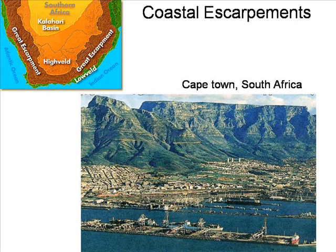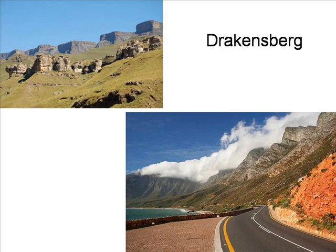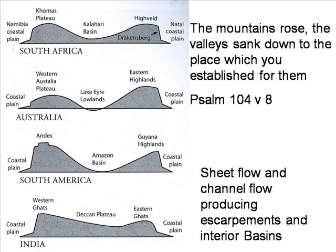The southern half of the continent of Africa is ringed by these enormous coastal escarpments, with the high-veiled plain and Kalahari basin behind it. Coastal escarpments and interior basins are a common feature of the world's continents, as this cross-section of the continents of Africa, South America, India and Australia demonstrates. How can this be explained from the perspective of a global flood?